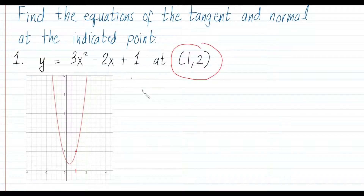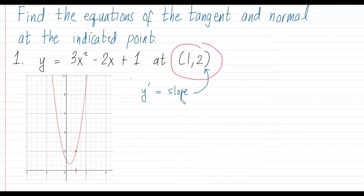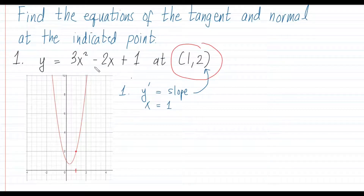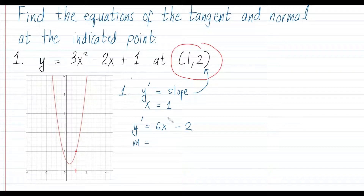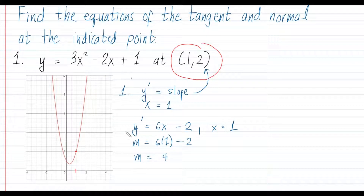We have already learned that the first derivative gives us the slope at any point. If we want to solve the slope at the particular point (1, 2), after getting the first derivative we substitute our x value, which is 1. So: y = 3x² − 2x + 1; the first derivative is 6x − 2. Then the slope m at x = 1 is 6(1) − 2 = 4.